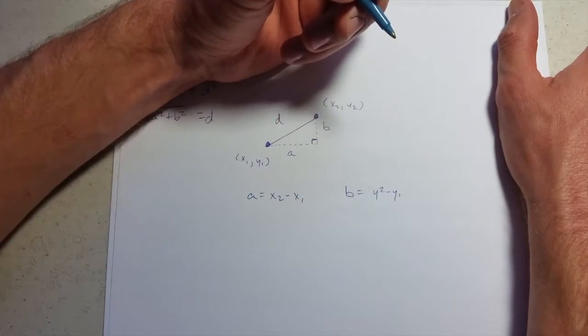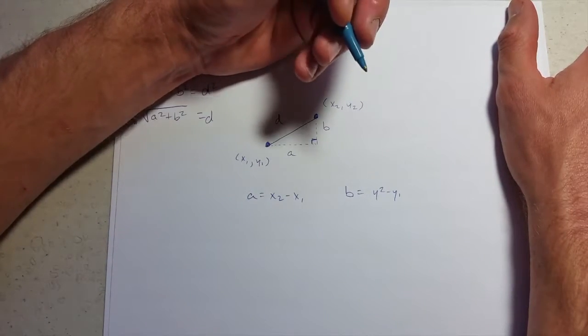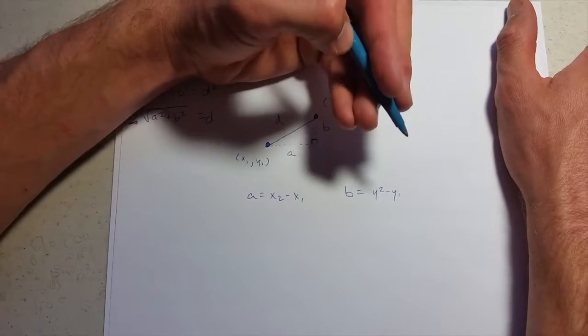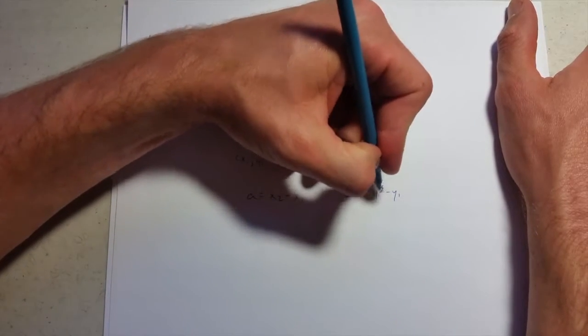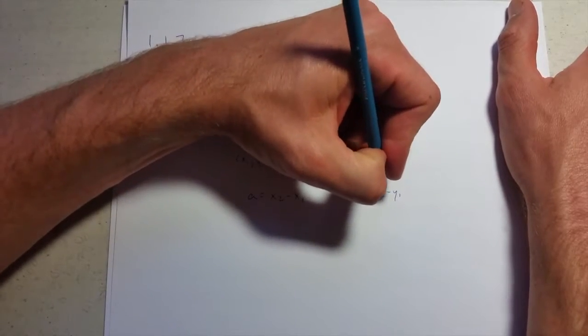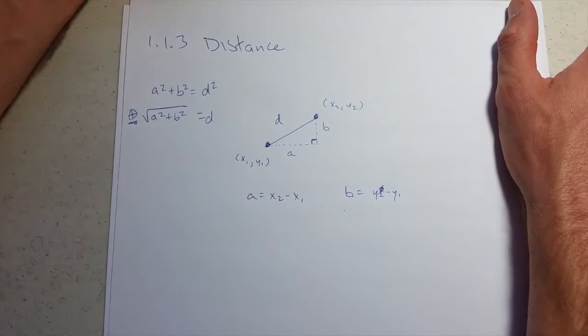And b is similar, but it's between the y coordinates. So it's going to be y2 minus y1. And I wrote it as y squared, so I did this because I want you to be careful and make sure that you write subscripts, not superscripts. Superscripts are exponents or powers.